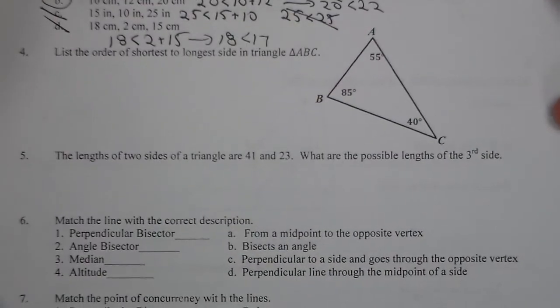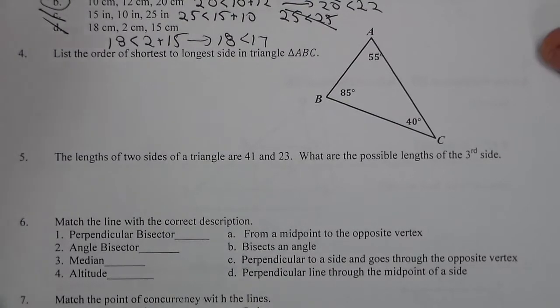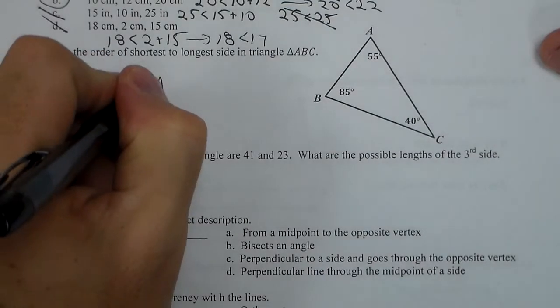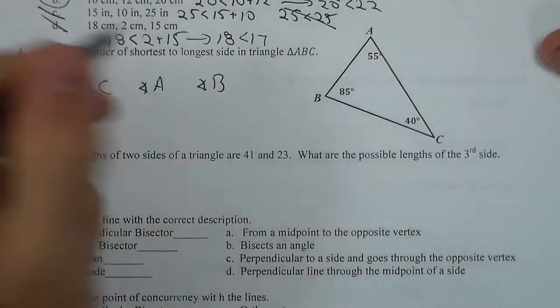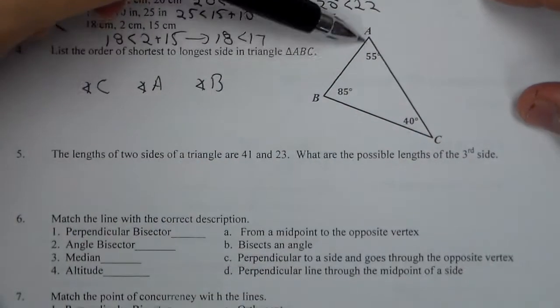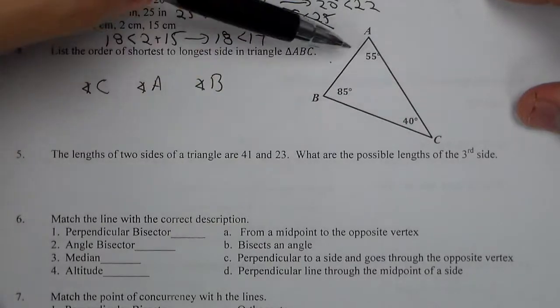Now for number 4, we need to list the order from shortest to longest side. First thing I'm going to do is list the order of the angles. So C is the smallest angle. A is next. B is the largest. So now when I look at the opposites to like C, it's the side that does not intersect it. It's also the letters that it doesn't use. So C is opposite AB.